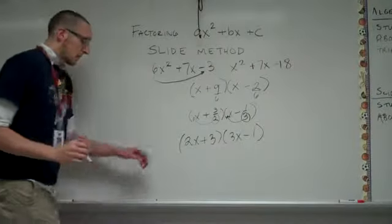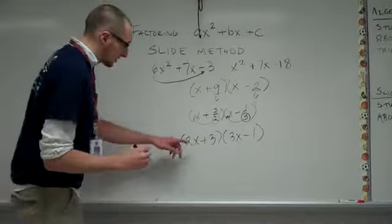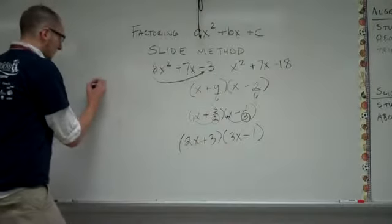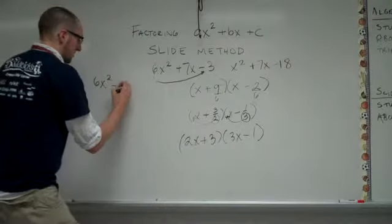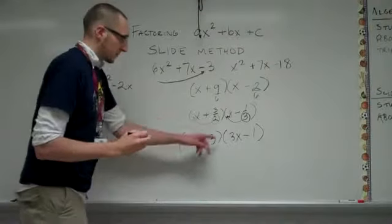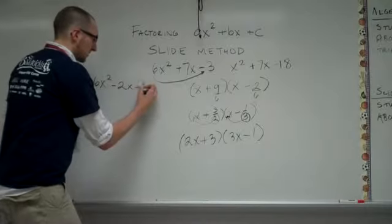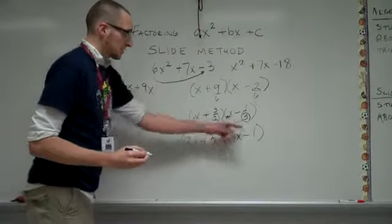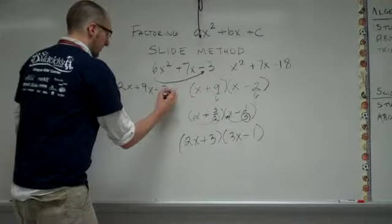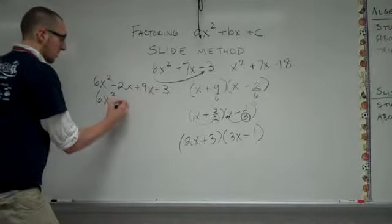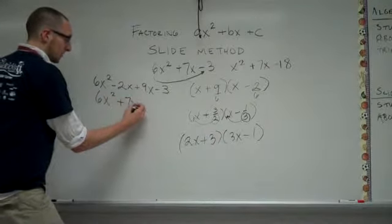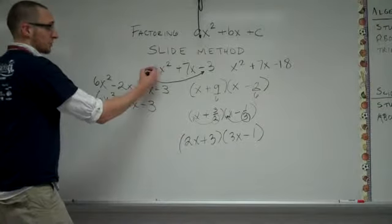So I want to check our work over here real quick just to make sure. So let's FOIL this out. We have 2x times 3x, that's going to be 6x squared. 2x times negative 1, that's minus 2x. 3 times 3x, that's plus 9x. And 3 times negative 1, that's minus 3. When I simplify I get 6x squared plus 7x minus 3, which is what we started with.